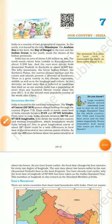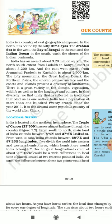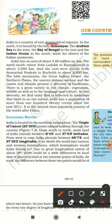Hello students. In this video we are going to start Geography Chapter Number 7: Our Country India. India is a country of vast geographical expanse, meaning India has a big variety of geographical features. In the north it is bound by the lofty Himalayas, the Arabian Sea in the west, the Bay of Bengal in the east, and the Indian Ocean in the south washes the shores of the Indian Peninsula.